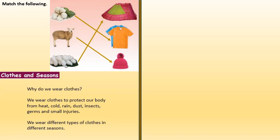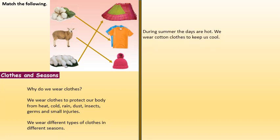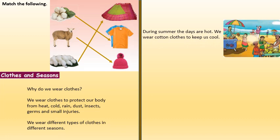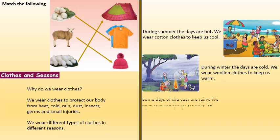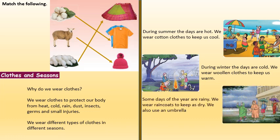We wear different types of clothes in different seasons. During summer, the days are hot and we wear cotton clothes to keep us cool. During winter, the days are cold and we wear woolen clothes to keep us warm. Some days of the year are rainy, and we wear rain clothes to keep us dry. We also use an umbrella.